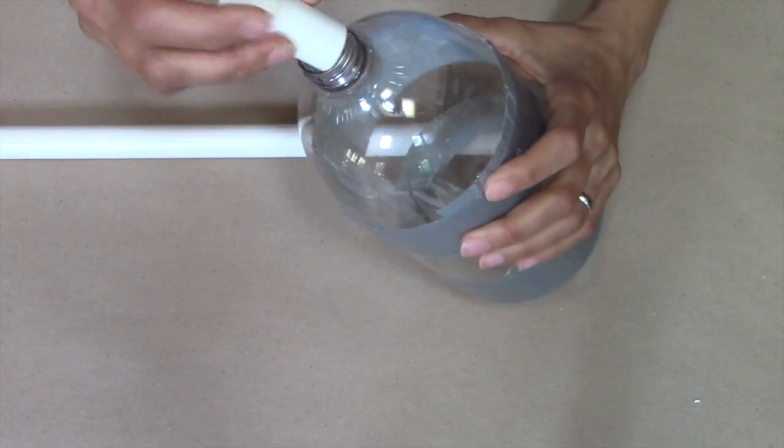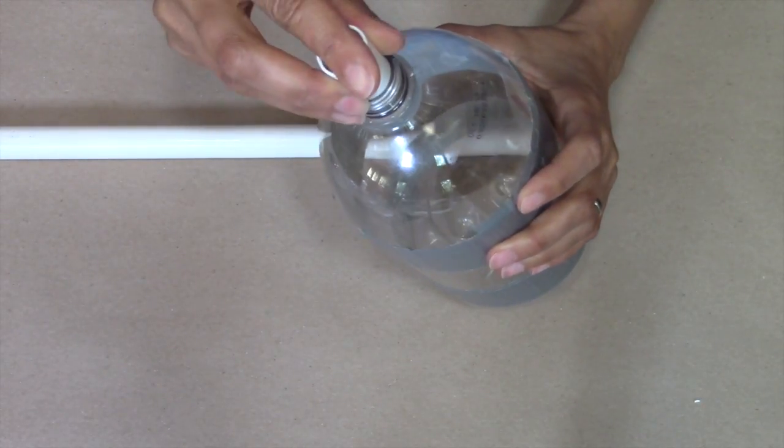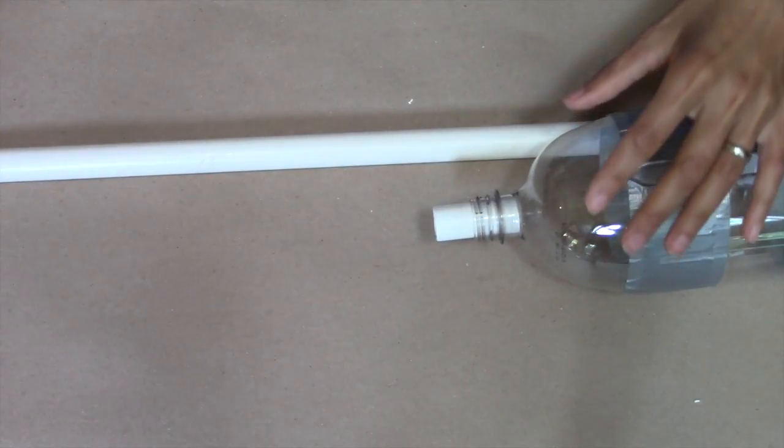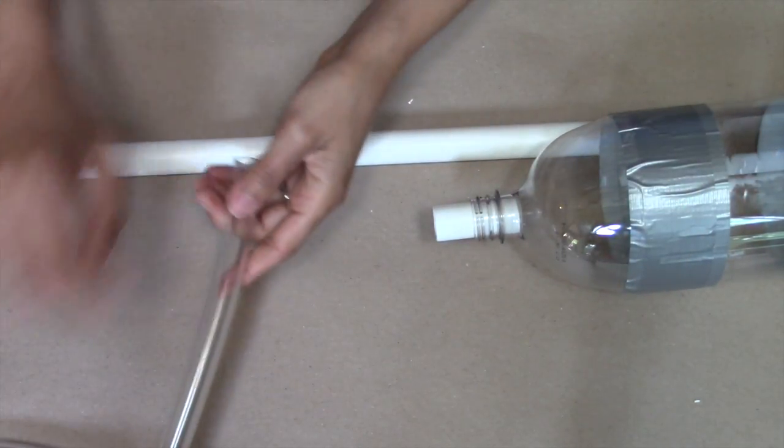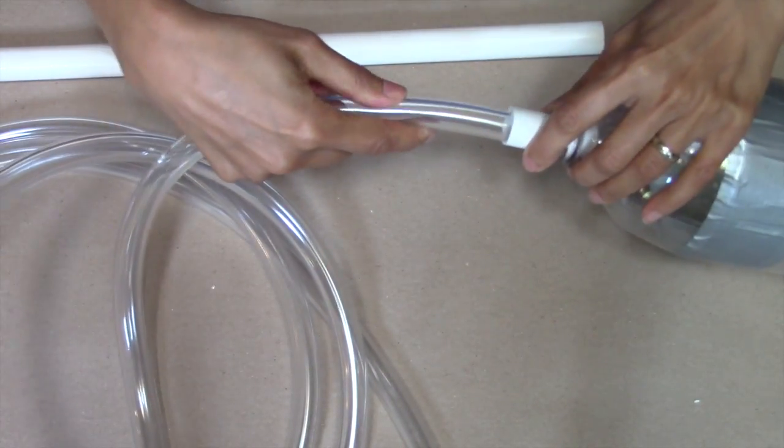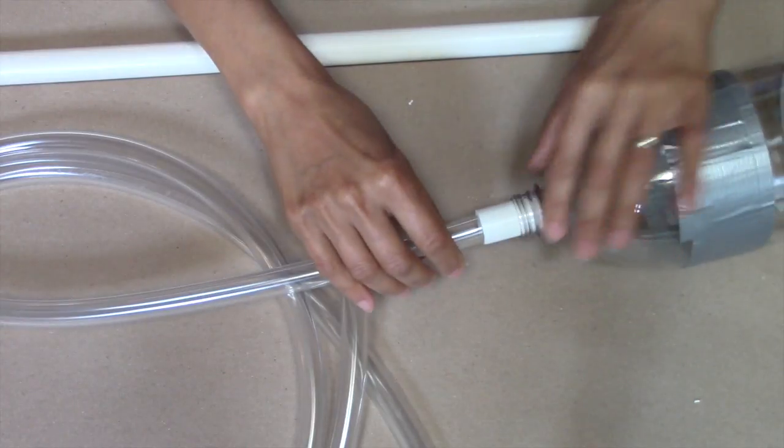Next, take the 2 inch piece of pipe and slide it into your 2 liter bottle. Slide one end of your flexible tube into that. Be careful not to push the 2 inch piece all the way into the bottle because you may not be able to get it back out.